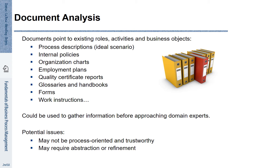How can you find out about a process? One way is to read documentation. Many processes have documentation describing which roles are involved, which activities are supposed to be conducted, and which business objects are involved. There are also different documents not exactly about the process but related to specific aspects — internal policies, organizational charts, employment plans, quality certificate reports, glossaries and handbooks, forms, work instructions, and so forth.